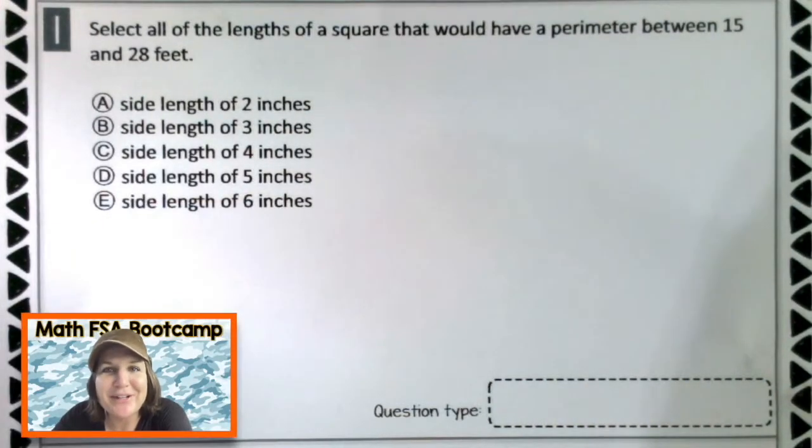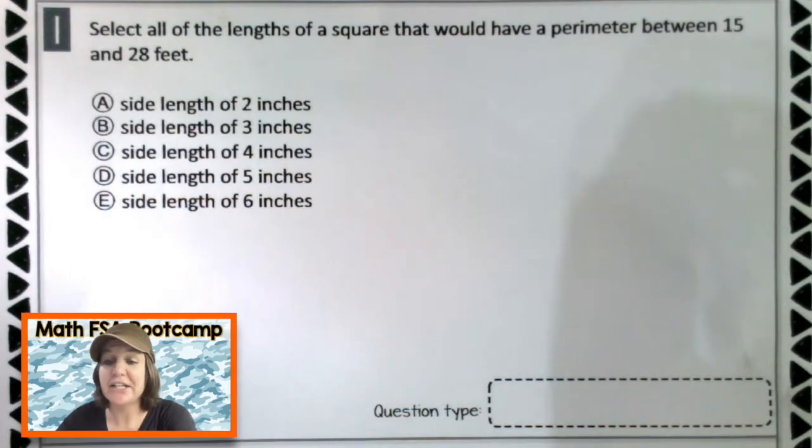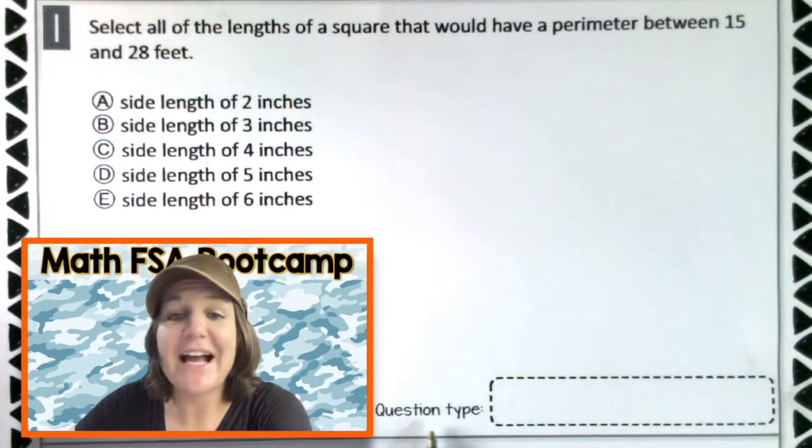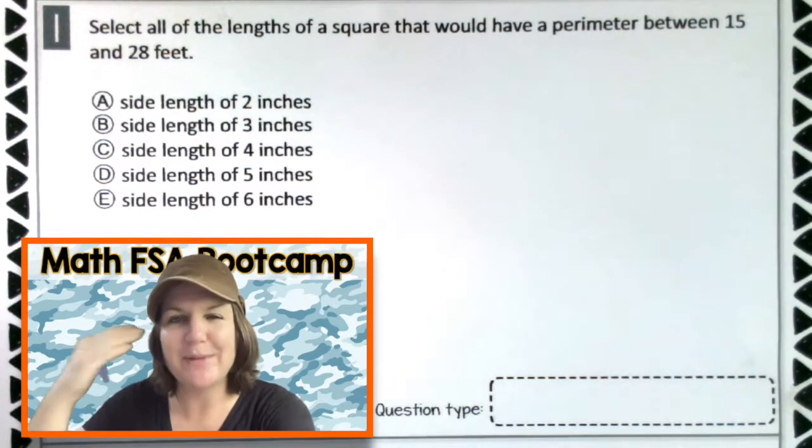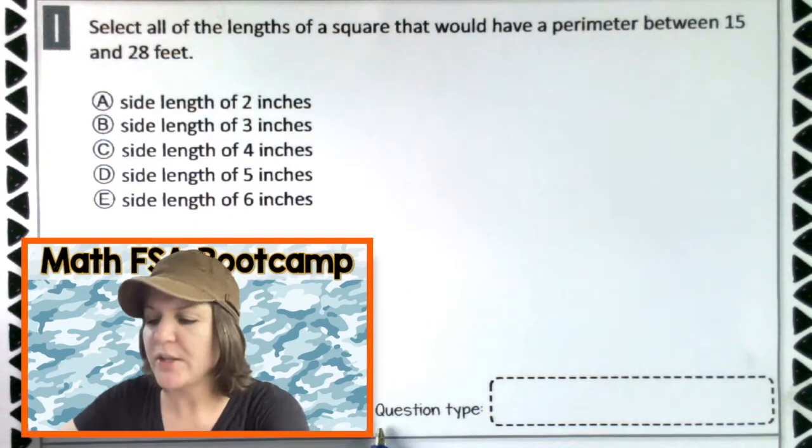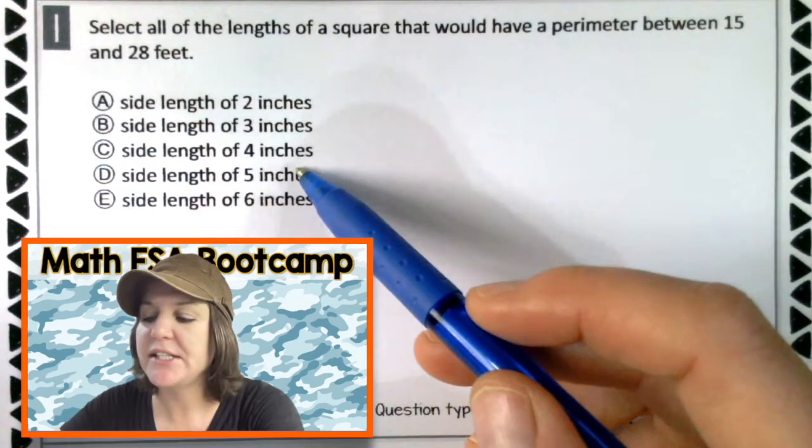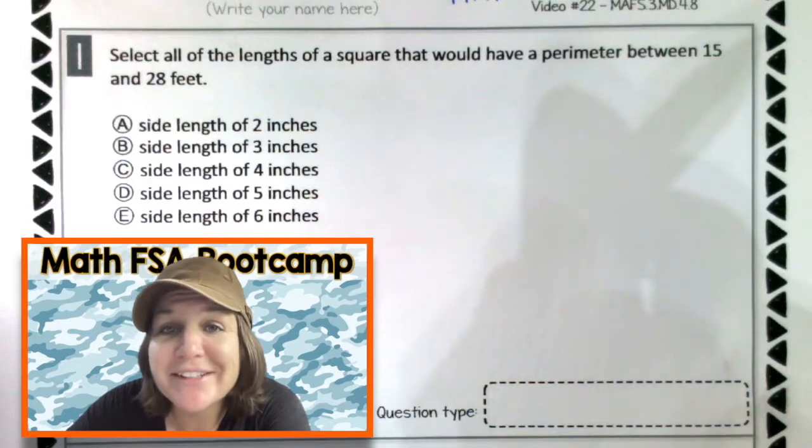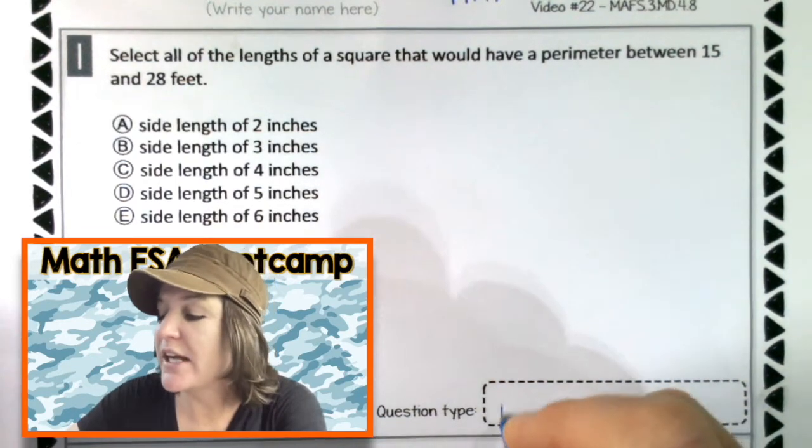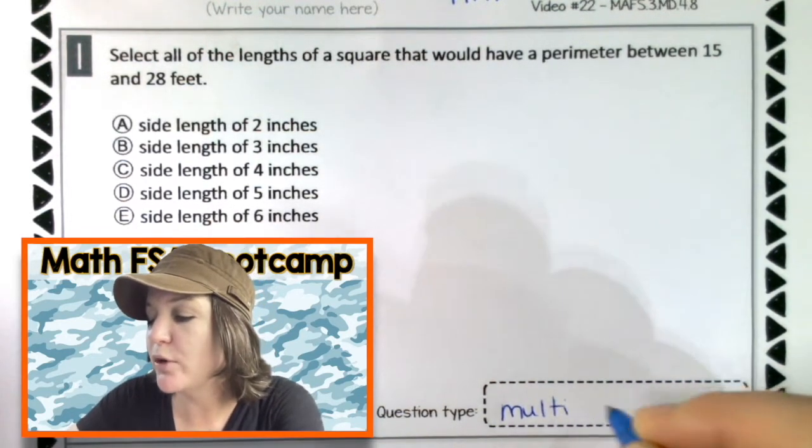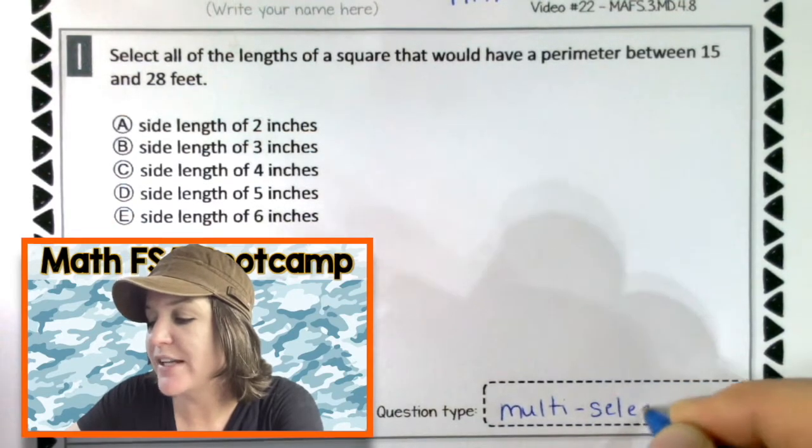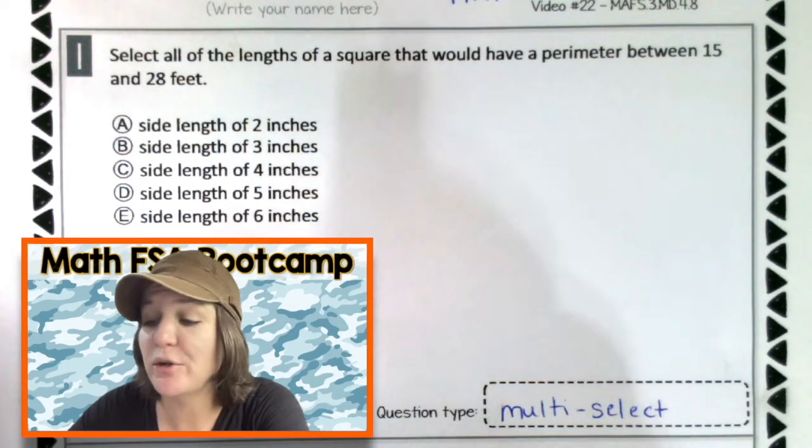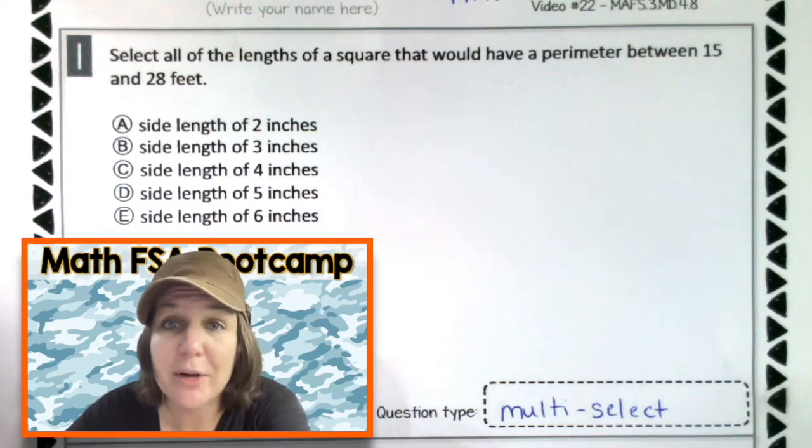All right, third graders, welcome back. Let's go ahead and check your work and see how you did. If you've been watching all the other episodes, you know that first, I like to identify the question type. It helps me to get in the right mindset for the problem. So, I'm seeing A, B, C, D, and E. So, what kind of question is this? It is a multi-select, meaning there should be more than one correct answer. We don't know how many, which is why we are going to look at all of them. So, let's go ahead and read and mark up our text.